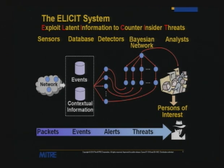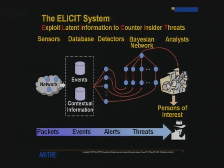An analyst really needs the ability to prioritize. To do that, we use a Bayesian inference network that, based on degrees of belief, produces a probability between zero and one that you have a malicious insider given the observed behavior or alerts. That ultimately feeds into a user interface where an analyst works from threats down to the alerts that produced the threat score, down to the events that produced the alerts.